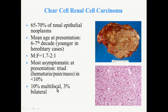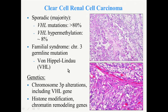When you think about bilateral tumors, the most common renal tumor that is bilateral is papillary renal cell carcinoma. Going back to clear cell — in sporadic cases, the majority have VHL mutation in more than 80% of cases, and hypermethylation of VHL in a subgroup.